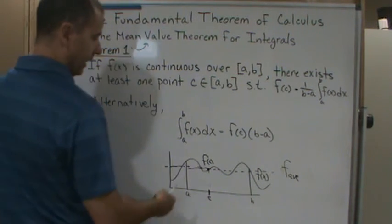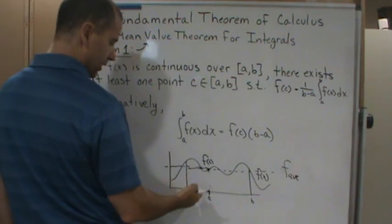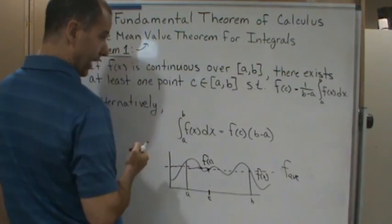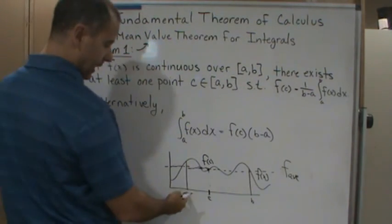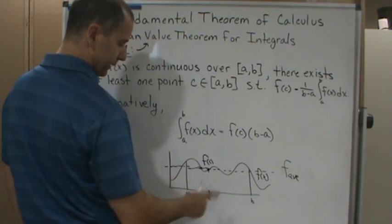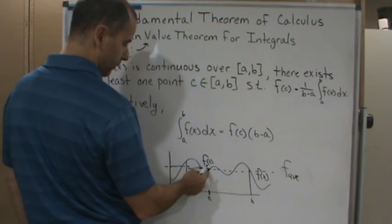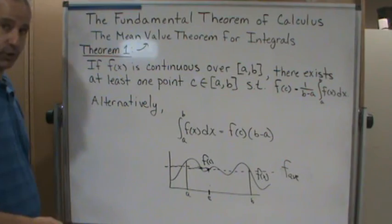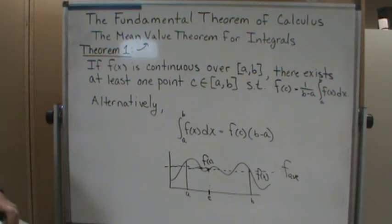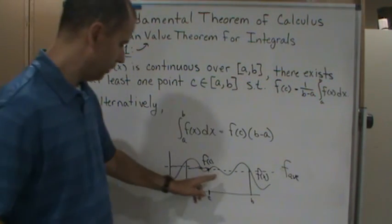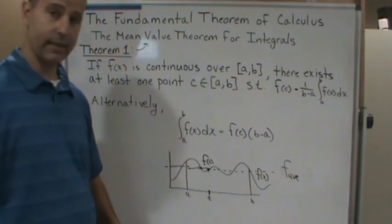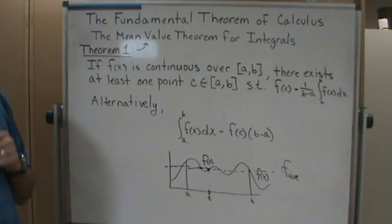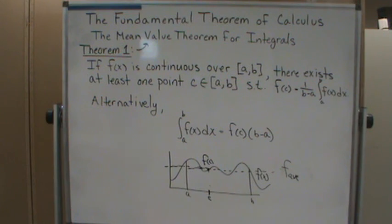So what it's saying here is if f(x) is continuous and you find the average value of the function, there's got to be some c value, at least one, where the value of the function at c is the same as the average value of the function. There might be more than one, but what this theorem is saying is that there's going to be at least one c.